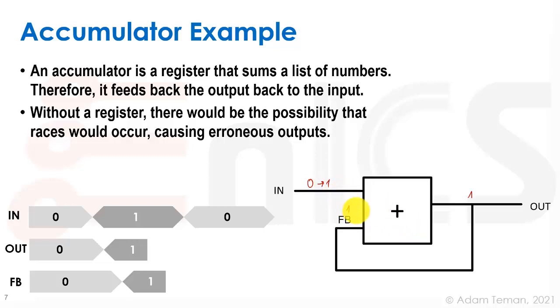And depending on the delay and so forth through the circuit, now the one and the one would be summed up and actually instead of the one here we would have a two. So our final output before this turned back into a zero would be two and that would be a mistake.